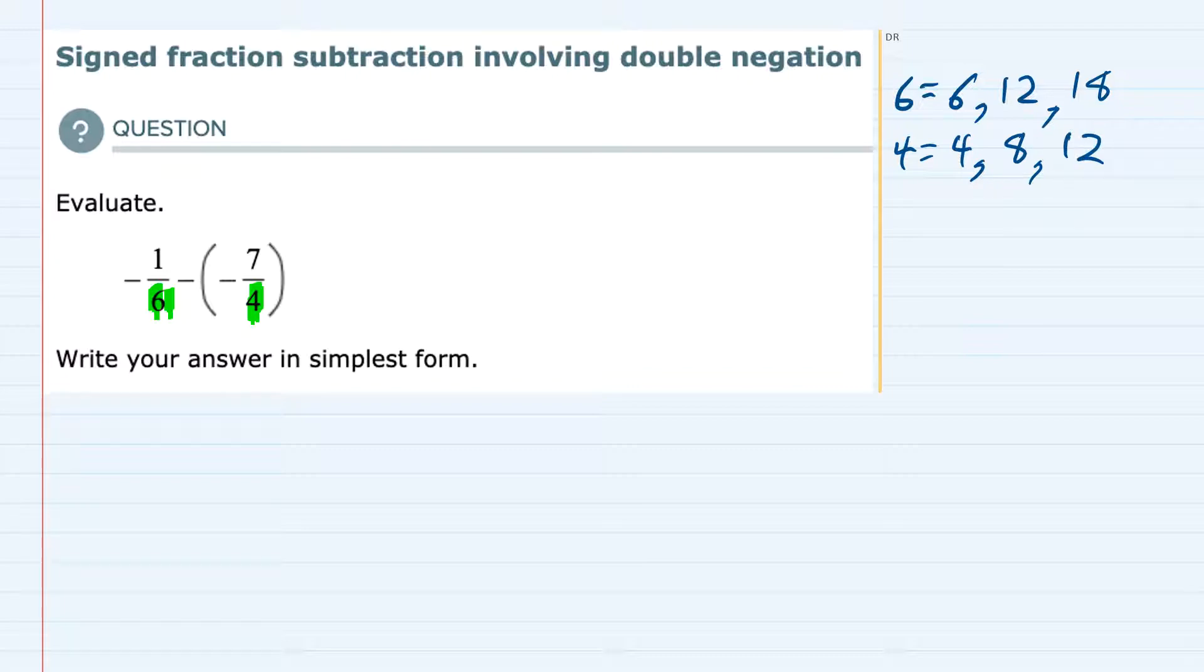We can see that the lowest common multiple, the smallest multiple that they have in common, is 12. So my first step is going to be to rewrite this problem with that common denominator of 12.